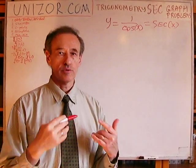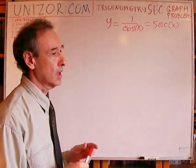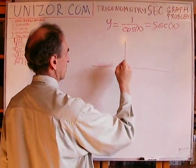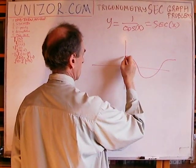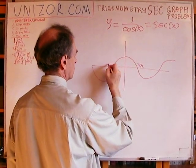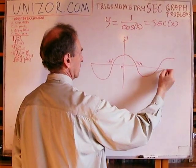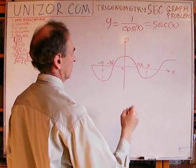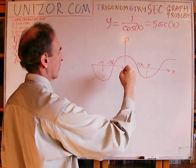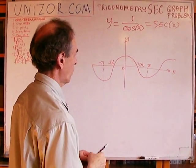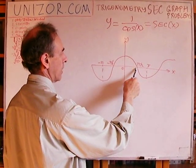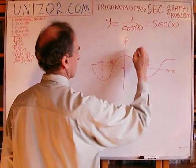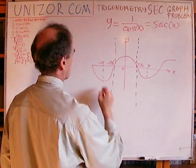Before addressing any individual problem, let's talk about secant itself briefly. Considering this definition and considering that cosine looks like this — where we have π/2, -π/2, 0, and the axes — 1 over cosine of x obviously has asymptotes where cosine equals 0, which is π/2 plus πn for any integer n, or -π/2, -3π/2, etc. So these are asymptotes for secant.